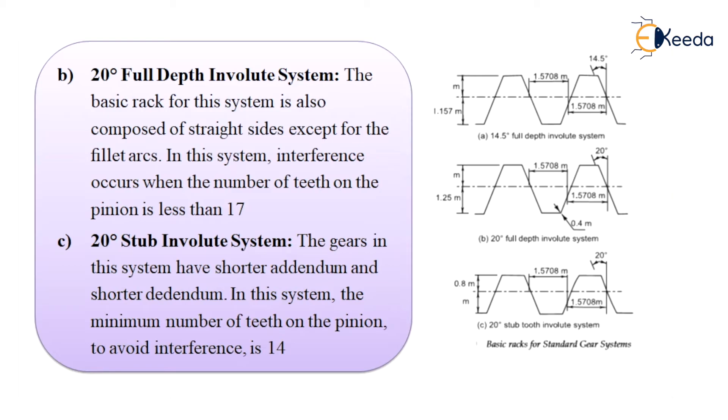The third system is 20 degree stub involute system. The gears in this system have shorter addendum and shorter dedendum. The interfering portion of the tooth, that is a part of addendum, is thus removed. Therefore, the teeth have smaller interference. This also reduces the undercutting. In this system, the minimum number of teeth on pinion to avoid interference is 14. The main disadvantage of this system is due to the insufficient overlap, the vibrations are likely to occur.